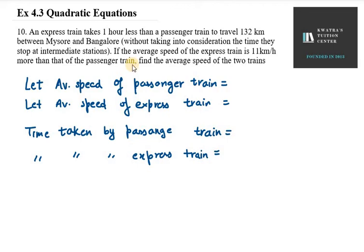Hello everyone, let's start with question number 10. In this problem, an express train takes one hour less than a passenger train to travel 132 km between Mysore and Bangalore, without taking into consideration the time they stop at intermediate stations. The average speed of the express train is 11 km per hour more than that of a passenger train.